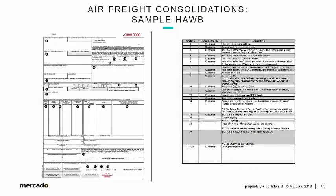As a U.S. importer that controls the freight, we're going to have to provide a fair amount of that information — albeit through our vendor overseas and how we instruct them to tell the forwarder at origin how to prepare a House Airway Bill. Everybody's involved: the overseas vendor, the freight forwarder, and the U.S. importer.